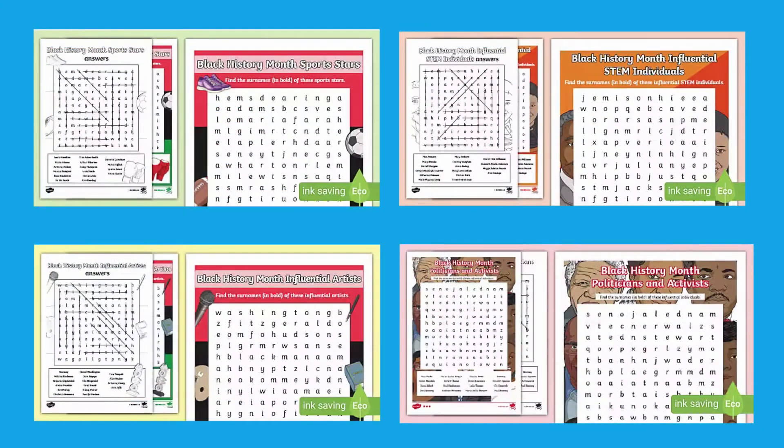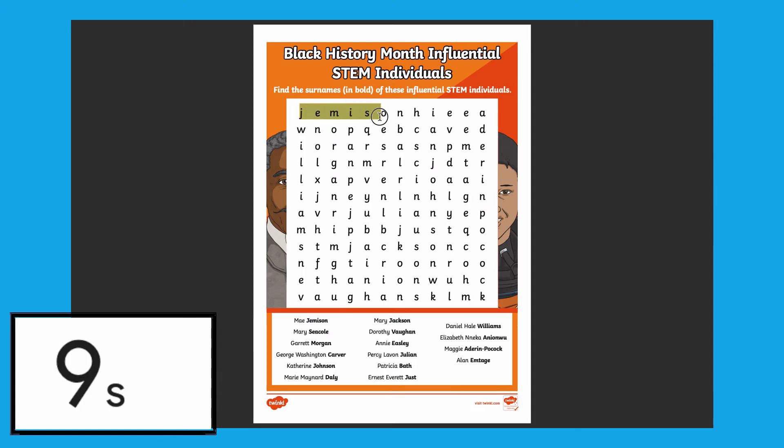These Black History Month word searches related to music, art, sports, activism, politics, and STEM introduce children to a variety of influential black individuals within these areas. Children can complete the word searches and even extend this by racing against the timer.